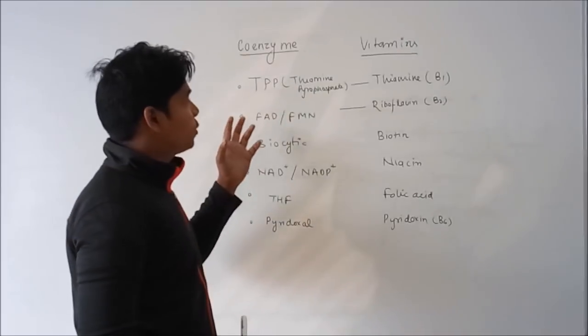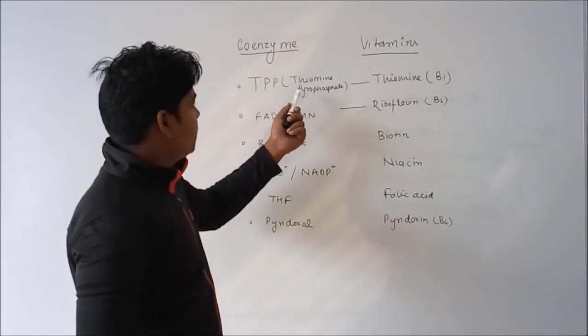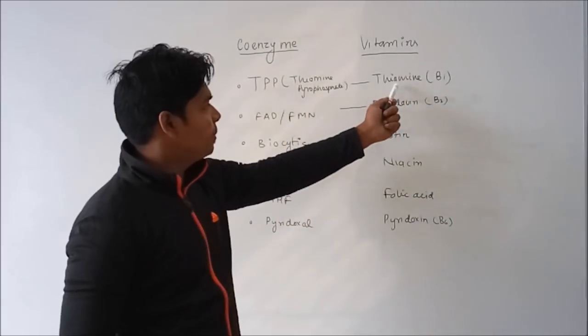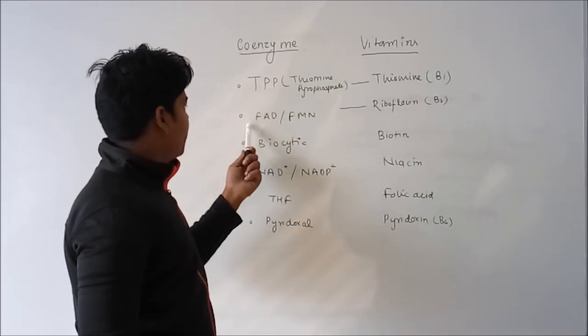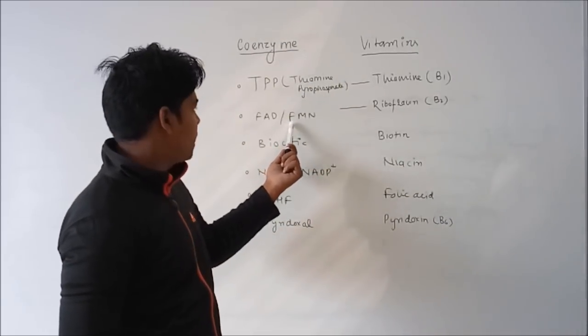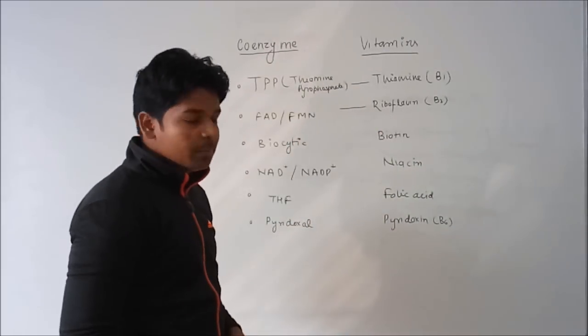These are some coenzymes and their vitamins. First one is TPP, thiamine pyrophosphate, which is utilized by thiamine B1. FAD or FMN, that is flavin adenine dinucleotide or flavin mononucleotide, is utilized by riboflavin B2.